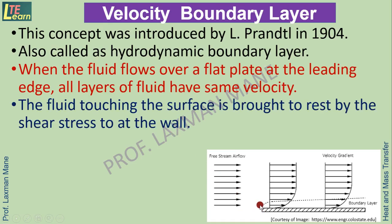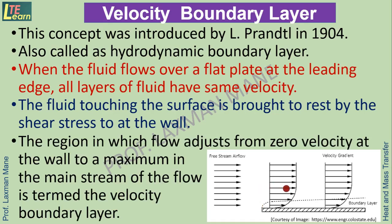The fluid touching the surface is brought to rest — velocity becomes zero — due to the shear stress at the wall. The region in which flow adjusts from zero velocity at the wall to a maximum in the main stream is termed the velocity boundary layer. At the surface, velocity of fluid particles is zero, and moving away from the surface in the normal direction, velocity increases until it equals the free stream velocity.